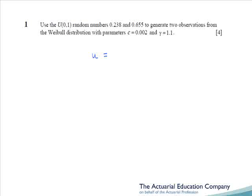The paper kicked off with a simulation question from chapter 14 of the notes. This was an easy four marks, and all it required was that you took your random numbers, which we'll denote by u, and equate them to the CDF of the Weibull distribution. All that's required is that you rearrange this to obtain the value of x. This would have presented absolutely no problems to any well-prepared candidate — four marks in the bag.